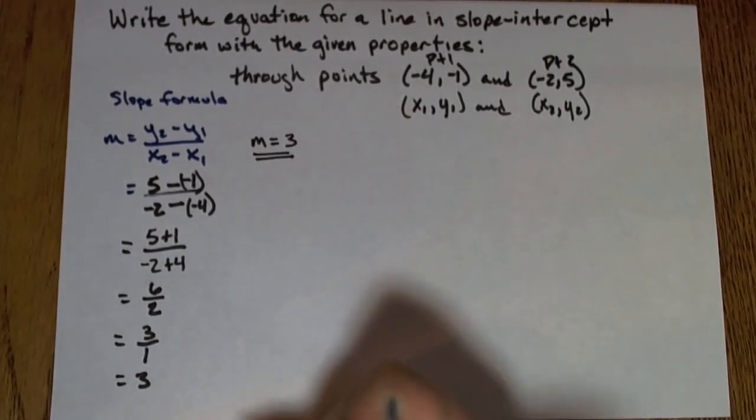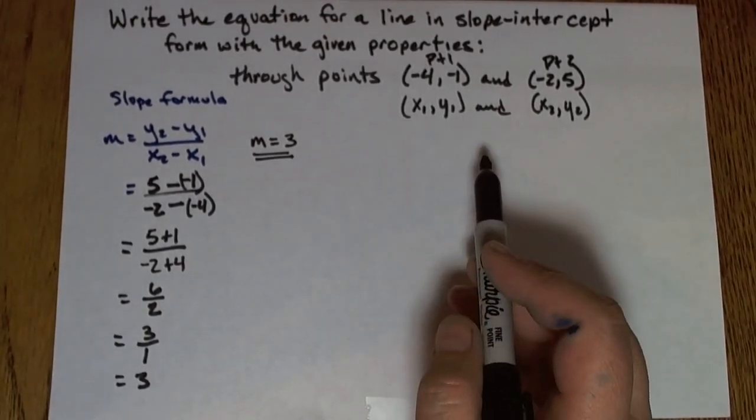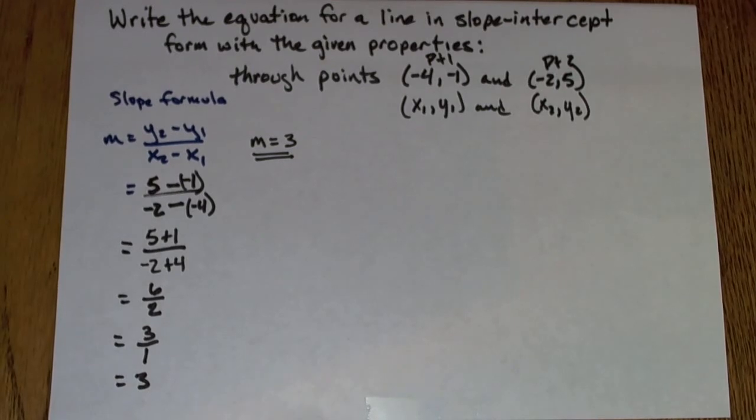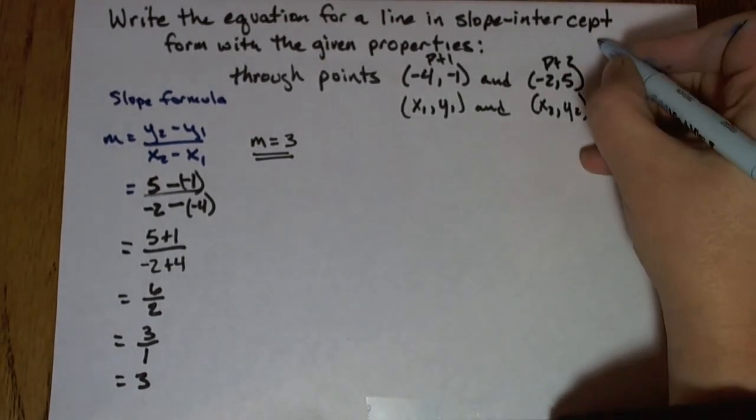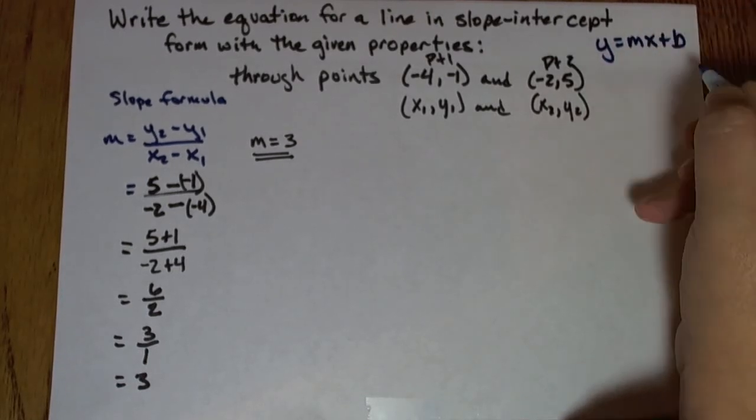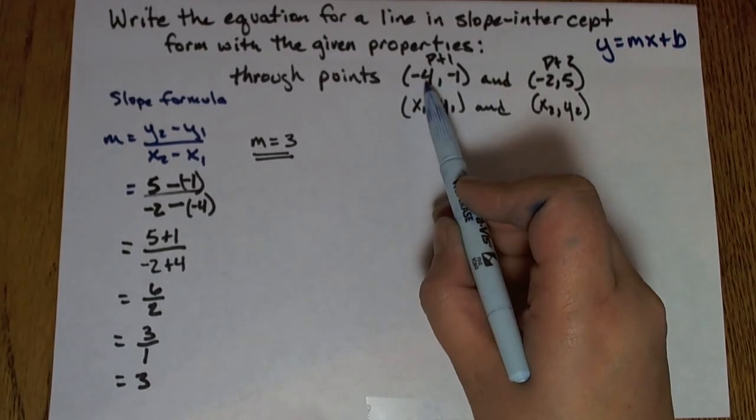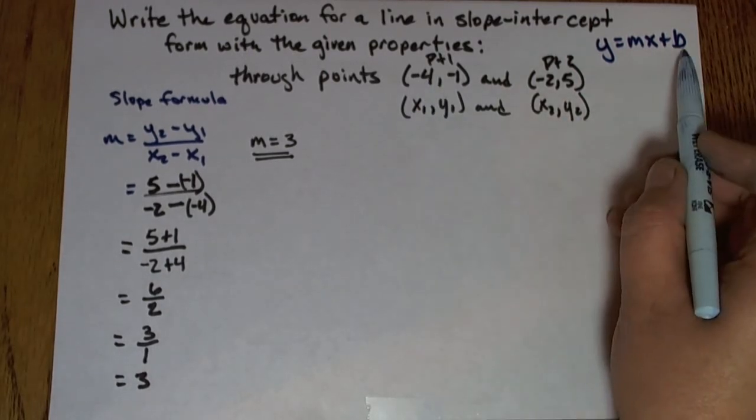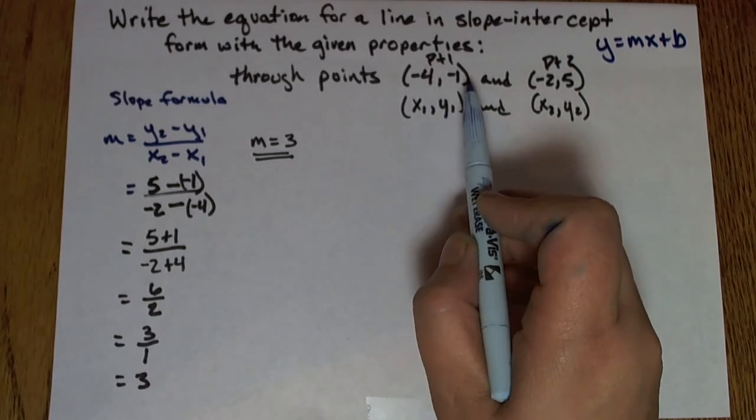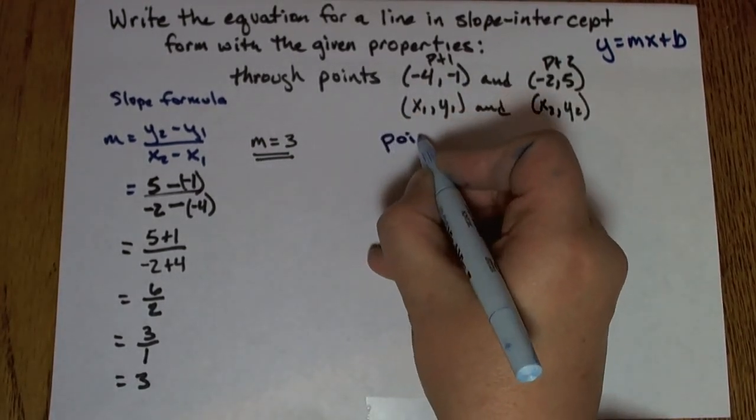Now I'm going to use my slope and one of these points in order to find an equation for the line. I know that in the end, I want to have the equation in slope-intercept form, y equals mx plus b. At this point, I don't know a y-intercept. Neither of my points had x coordinate of 0, so I'm not given the y-intercept. But I do know a point and a slope, so I can use the point-slope form of the line.